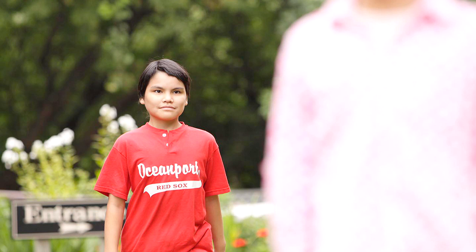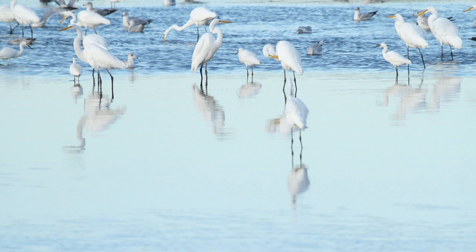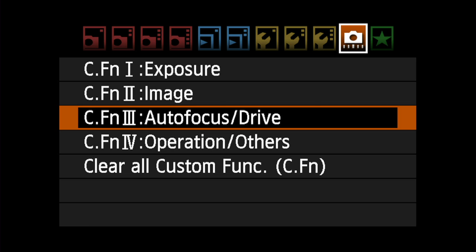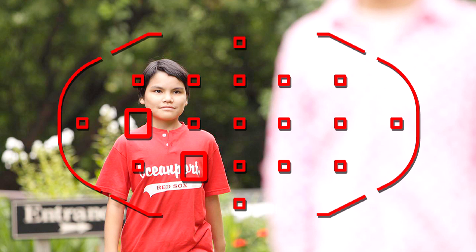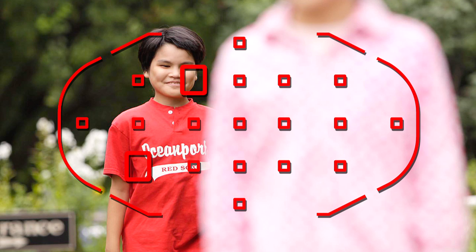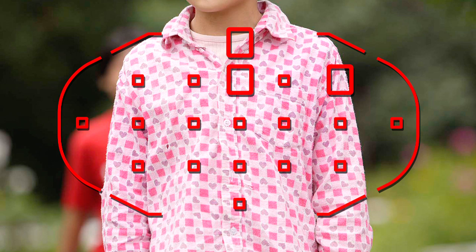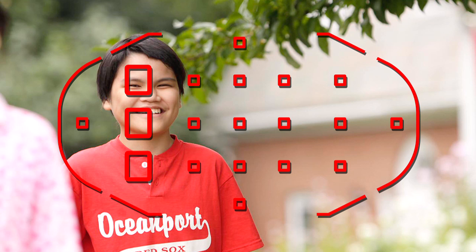AI Servo AF Tracking Method. Any time you have more than one focusing point selected, this custom function tells the camera how to deal with any new subjects that enter the focus area. The default setting, Main Focus Point Priority, means the camera will try to refocus on any new subjects that are closer than the subject you've been tracking.